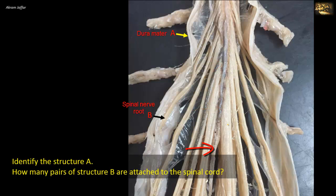We have 31 pairs of spinal nerves, each formed by the union of an anterior root B and a posterior root. The 31 pairs consist of 8 cervical, 12 thoracic, 5 lumbar, 5 sacral, and 1 coccygeal.